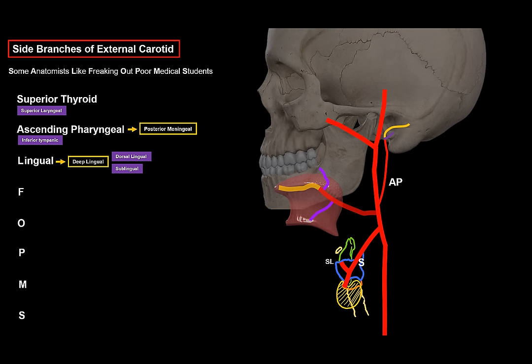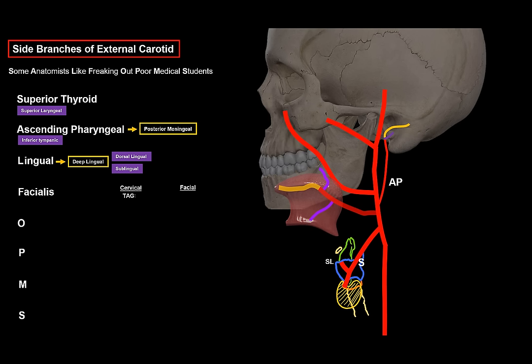The last of the anterior branches is the facial artery. It exits the external carotid at the region of the mandibular angle, curves towards the face at the base of the mandible, and continues upwards to the medial side of the eye as the angular artery. To organize the side branches, they are divided into two groups: cervical branches and facial branches, remembered with the mnemonic TAGS ALL.